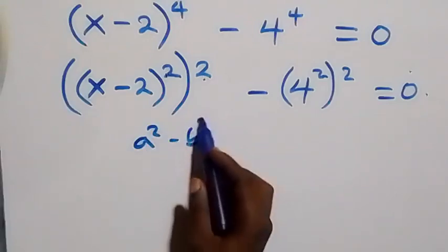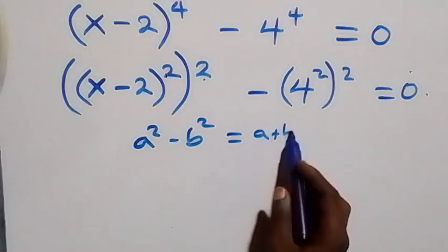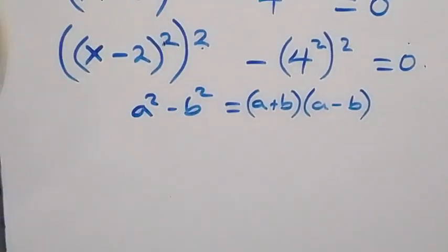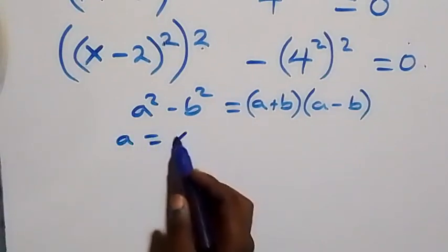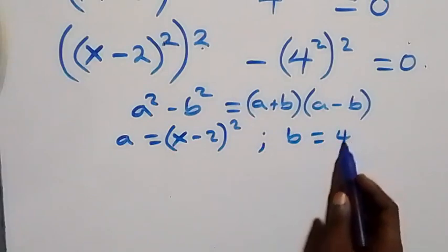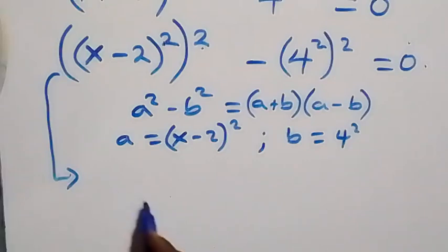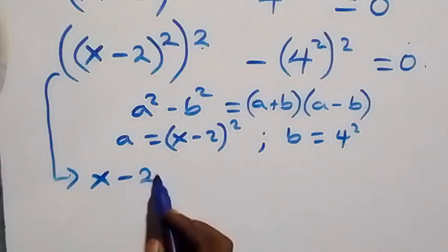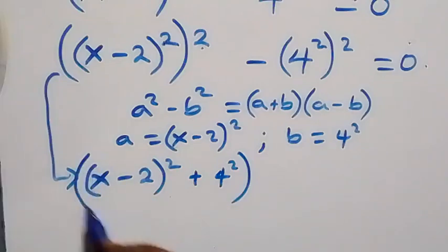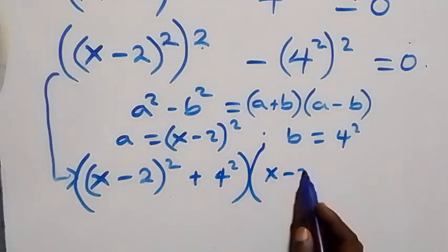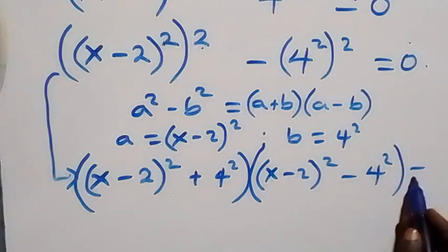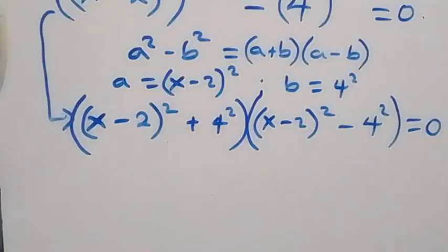This follows the difference of two squares: a squared minus b squared equals (a plus b)(a minus b). Here, a stands as x minus 2 all squared, and b stands for 4 squared. So this becomes (x minus 2 all squared plus 4 squared) times (x minus 2 all squared minus 4 squared) equals to zero.